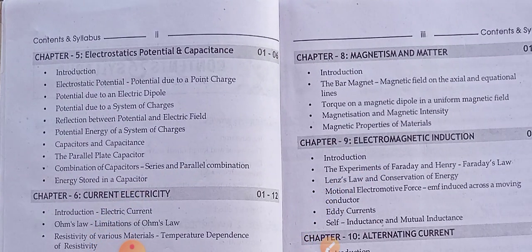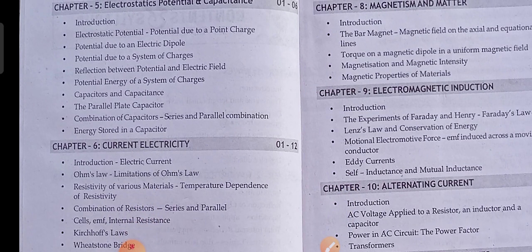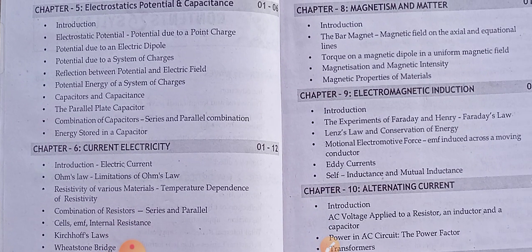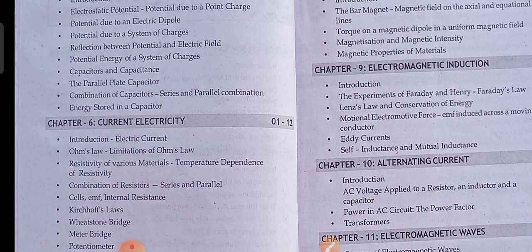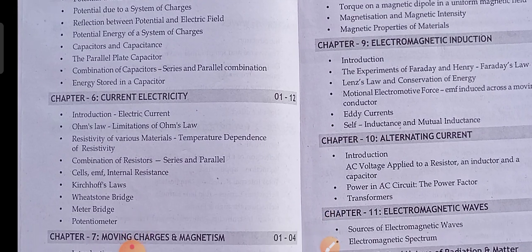Chapter 5 - Electrostatic Potential and Capacitance: Electrostatic potential, potential due to an electric dipole, potential due to a system of charges, the parallel plate capacitor, combination of capacitors, and energy stored in a capacitor.